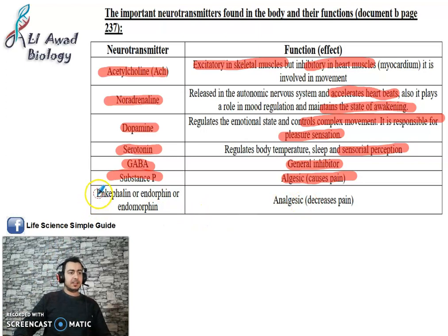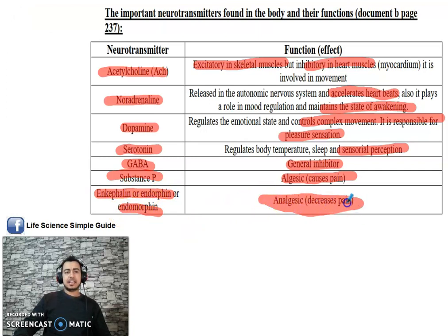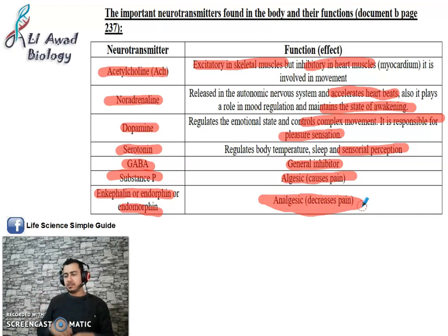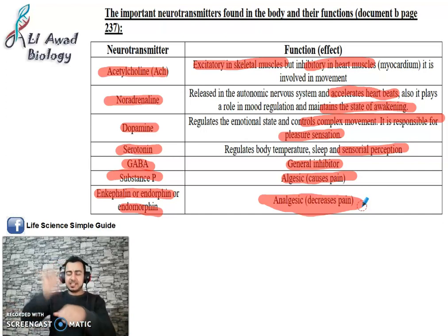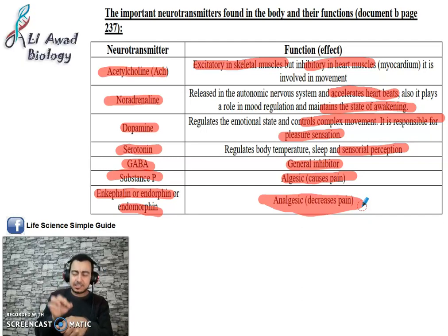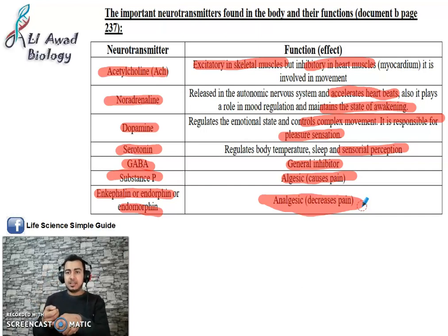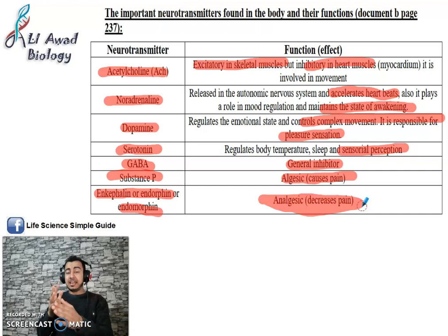Enkephalin, endorphin, or endomorphine — enkephalin is the most important here. It is an analgesic — a natural painkiller neurotransmitter. When you are injured, after a certain time the pain decreases and slows down naturally. This happens because the brain sends nervous messages to the site of the injury and releases enkephalin at specific synapses, which reduces pain. So enkephalin acts as an analgesic.